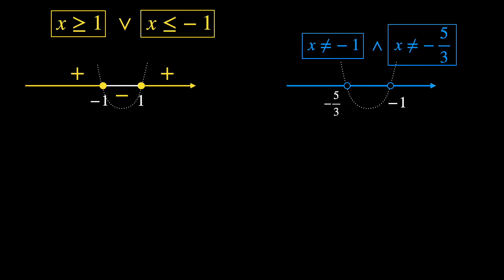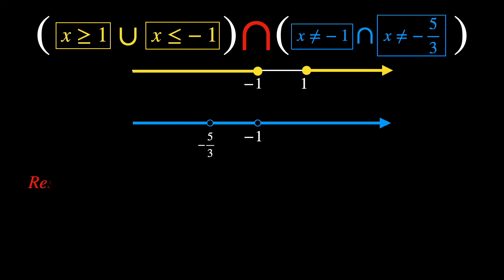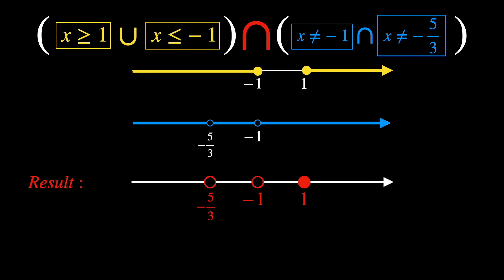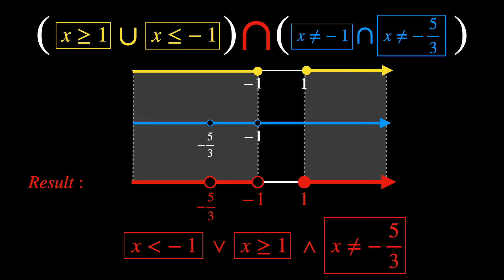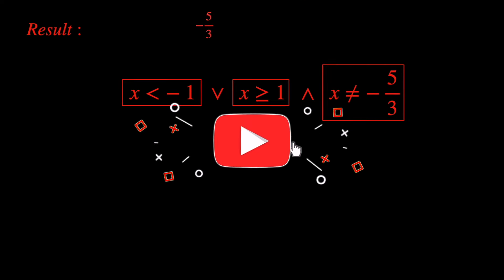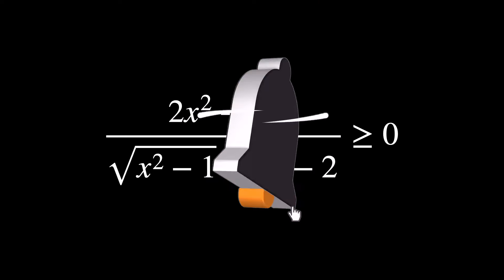Both conditions must be satisfied, which means we need to perform their intersection. As a result, we obtain x < −1, or x ≥ 1, with x ≠ −5/3. These are the correct conditions for existence. If you're enjoying this video, don't forget to like it and subscribe to the channel.